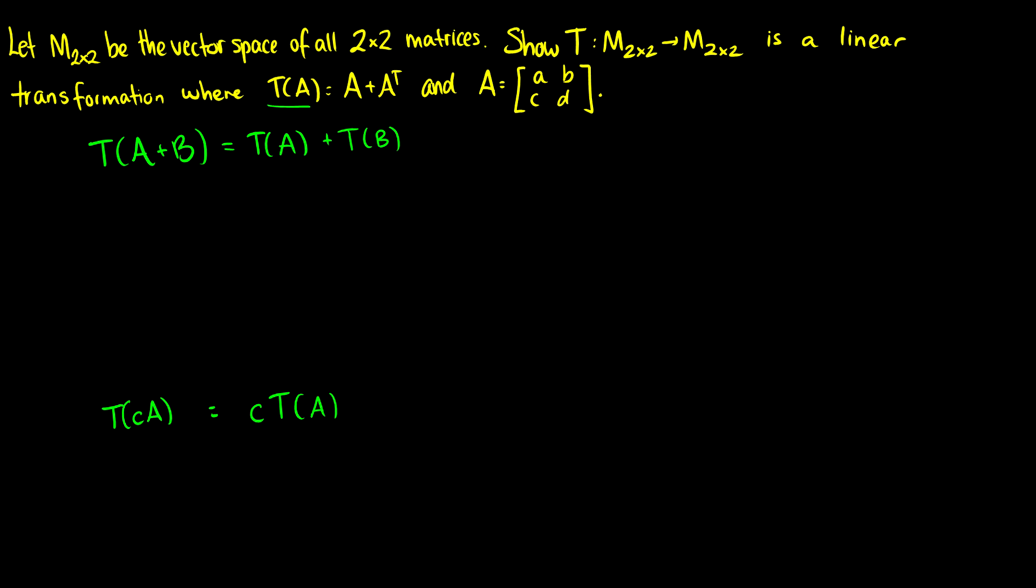So to do this let's take T of A plus B. T of A plus B, well now we just put A plus B into where all of our A's are. So this is going to be A plus B, and then it's going to be A plus B transpose. Okay so we can simplify the transpose a bit. So we have A plus B, and then we remember that when we take the transpose of two added things we just take the transpose of each and add them together. It's going to be A transpose plus B transpose.